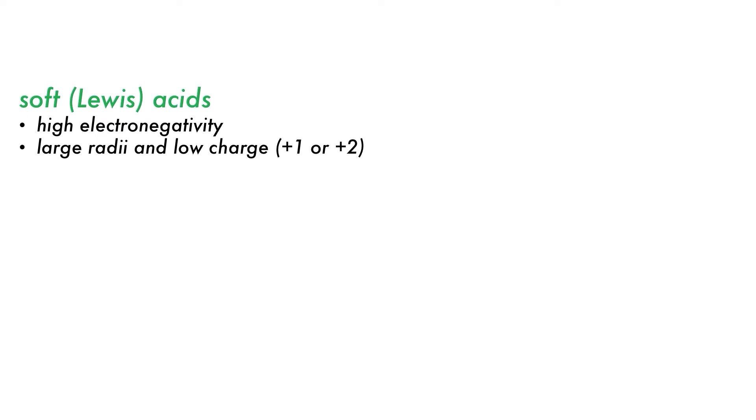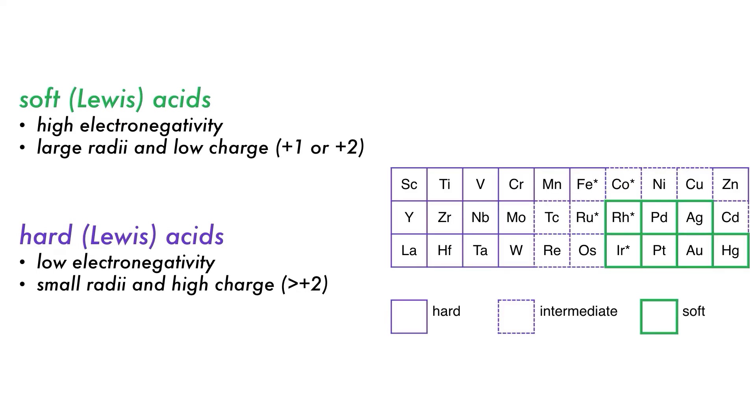Soft Lewis acids usually have high relative electronegativity for metals, large radii, and low charge, i.e., plus 1 or plus 2. They mostly occupy the bottom right of the D-block. Hard Lewis acids are generally the opposite with low electronegativity, small radii, and high charges. Due to the trends in size and electronegativity in the periodic table, the hard-soft acid-base classes lie in distinct regions of the table. This helps us to remember them. But remember, the oxidation states of metals can change hardness.